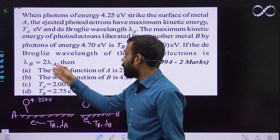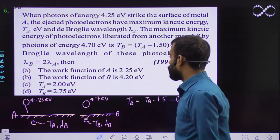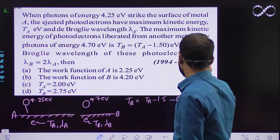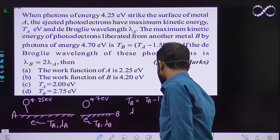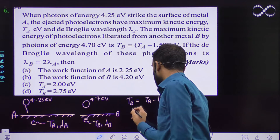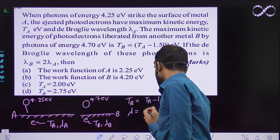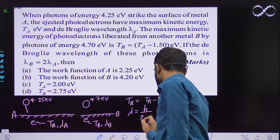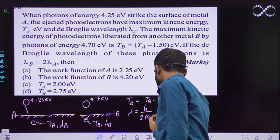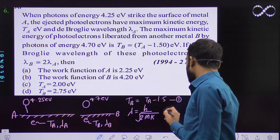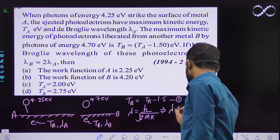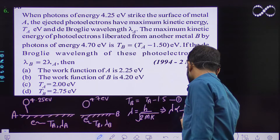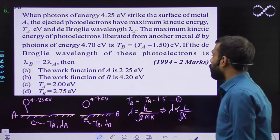Now there is another equation given in the question. As you all know, the de Broglie wavelength λ = h / √(2mK). From here I can say λ is directly proportional to 1 / √K.